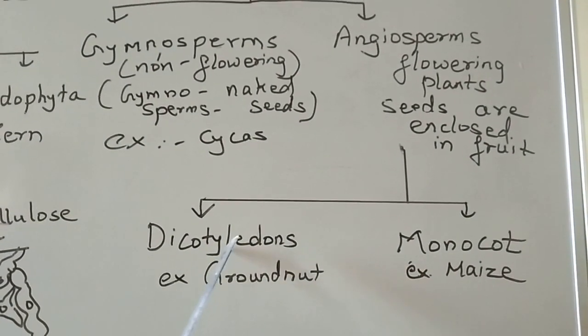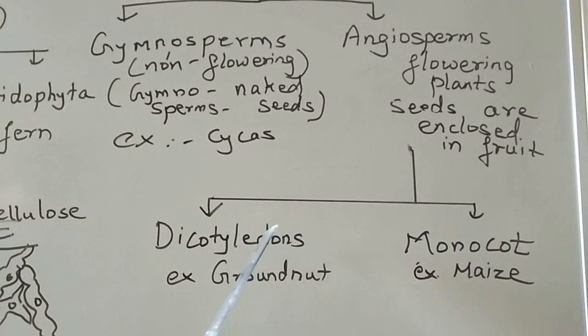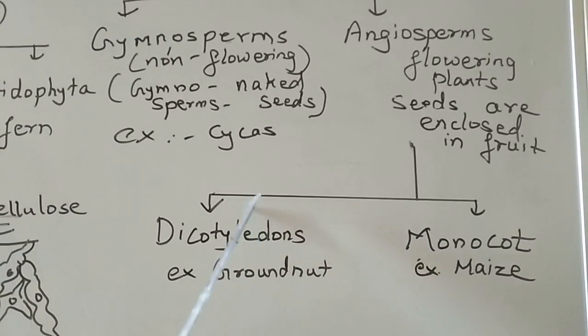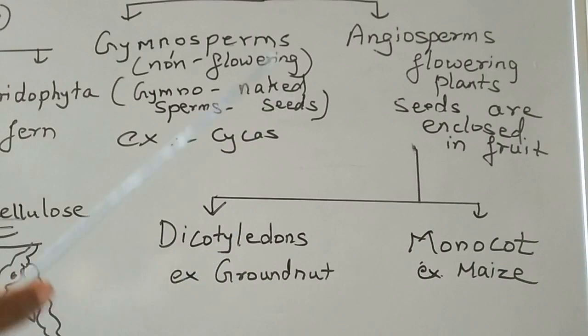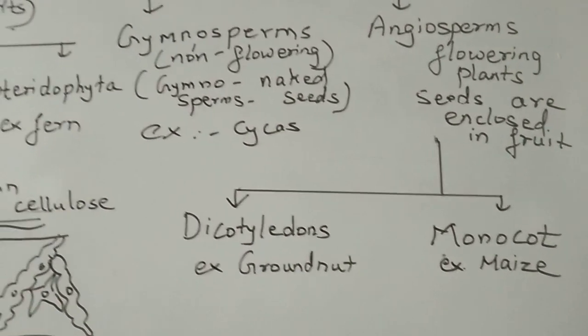Angiosperms are further divided into two types: dicotyledons and monocotyledons. What is the meaning of dicotyledon? Dicotyledon means having two cotyledons. We can take an example of groundnut.